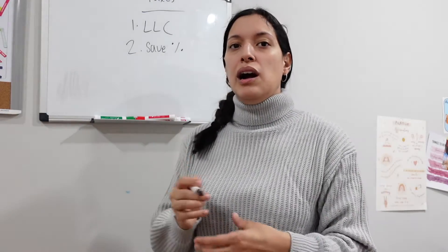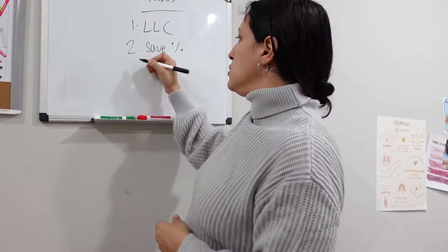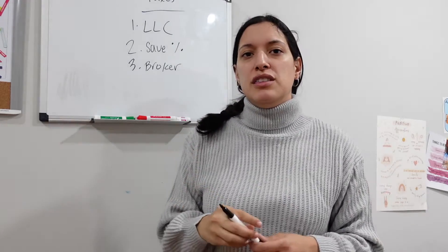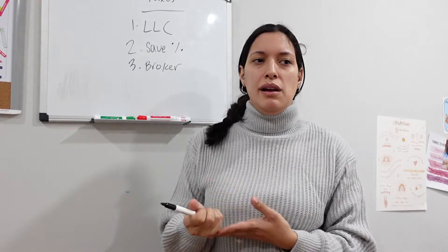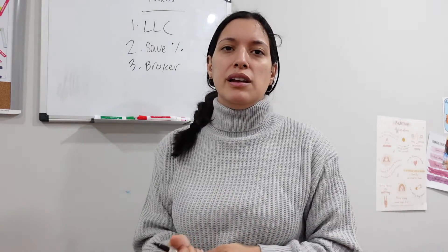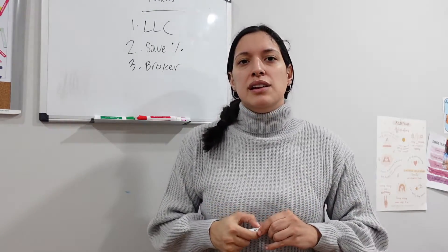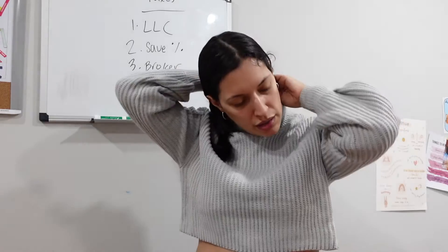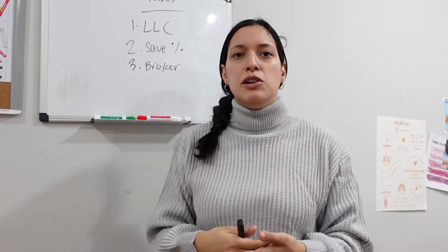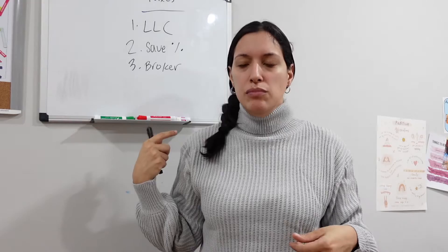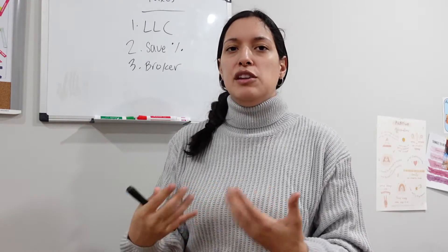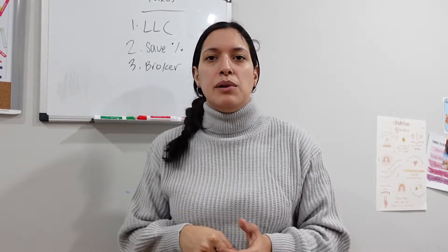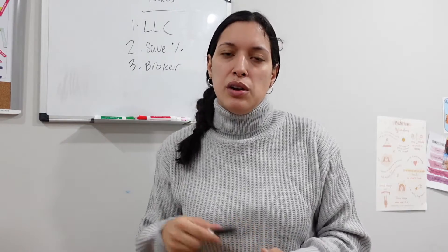The next thing you want to do is contact your broker. Make sure that they send you a 1099. You can write to them and ask, 'Do you guys send a 1099 at the end of the year?' The 1099 is a layout that tells you how much you make — it gives you a breakdown of every month, how much you made and how much you ended up taking out of your account. You need that paper in order to know the numbers to put in when you do your taxes.